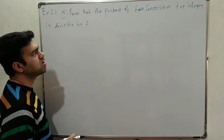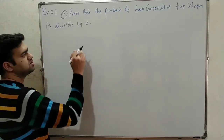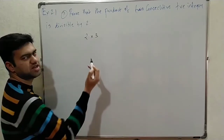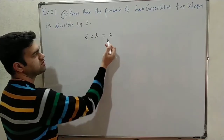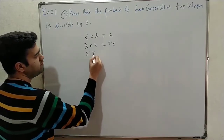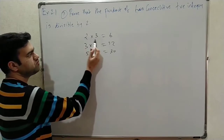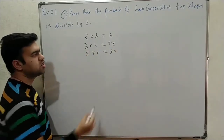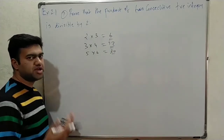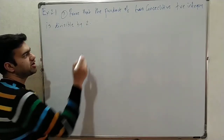Third sum: Prove that the product of 2 consecutive positive integers is divisible by 2. For example, 2 and 3 are consecutive: 2 × 3 = 6, divisible by 2. 3 × 4 = 12, also divisible by 2. 5 × 6 = 30, also divisible. So 2 consecutive positive integers multiplied always give an even number, and all even numbers are divided by 2 with remainder 0.